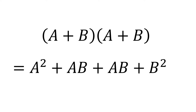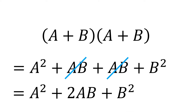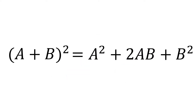ab plus ab is 2ab, so this is equal to a squared plus 2ab plus b squared. Therefore, the square of (a + b) is equal to a squared plus 2ab plus b squared.